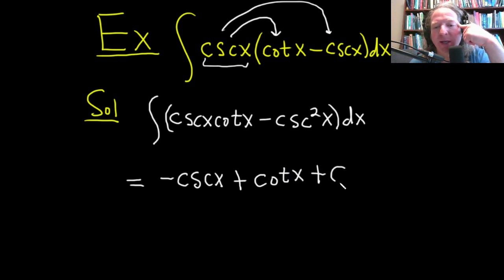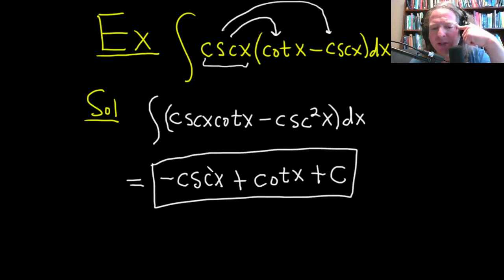And then we have our plus C, which is our constant of integration. That worked out really nice. Let's double check it. The derivative of cosecant is negative cosecant cotangent, but we've already got a negative here, so that makes this positive. And the derivative of cotangent is negative cosecant squared. So that works out perfectly in this example.